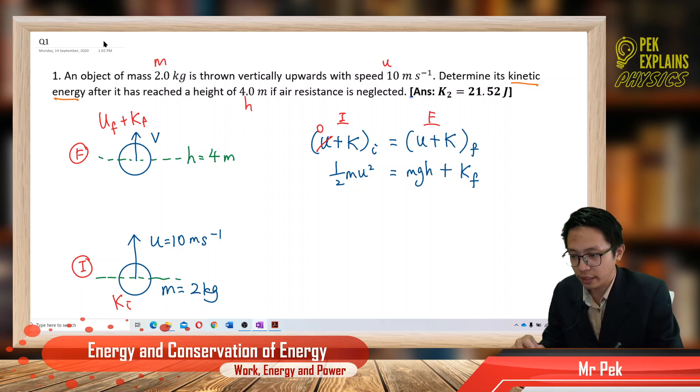Then, just substitute all the value. So, we have all the mass already. The mass is 2 kilogram. The initial velocity is 10.